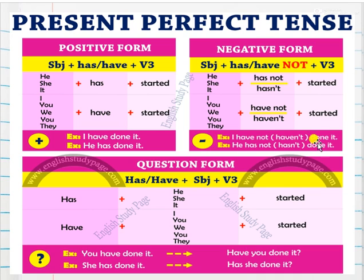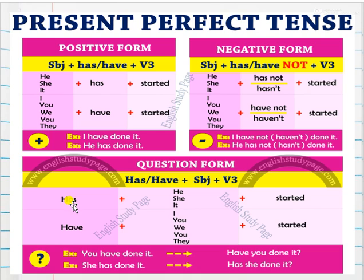Next one is question form. At the beginning of the sentence we put 'has' or 'have', then the subject. He, she, it come before 'has'; I, you, we, they come before 'have'. After the subject, add the verb: if it's a regular verb, add 'ed'; if irregular, use the third verb list.